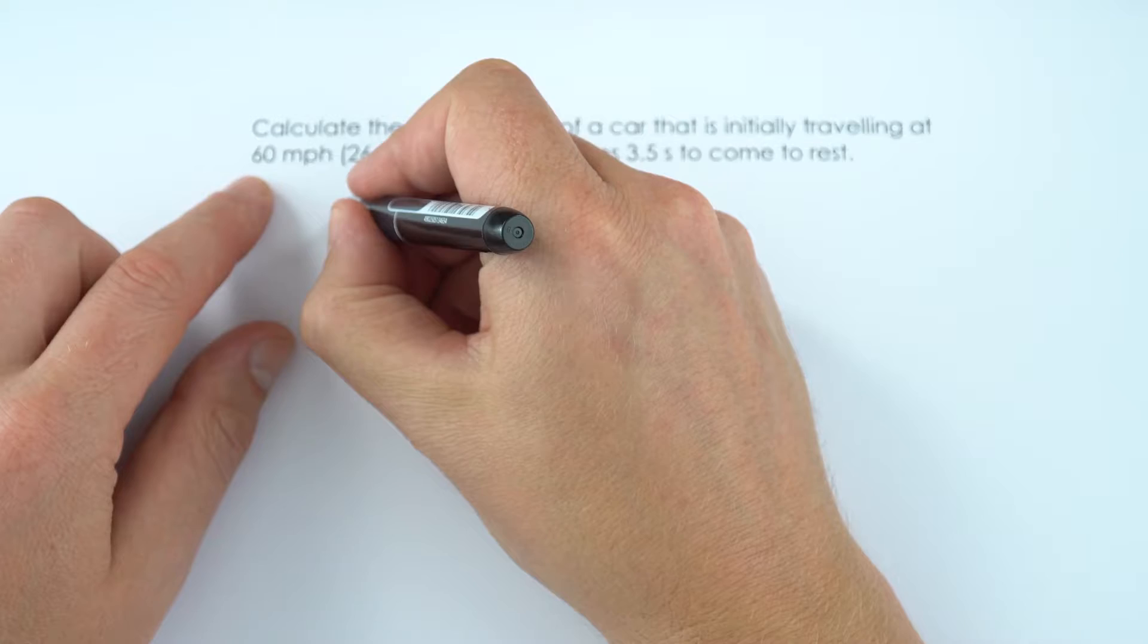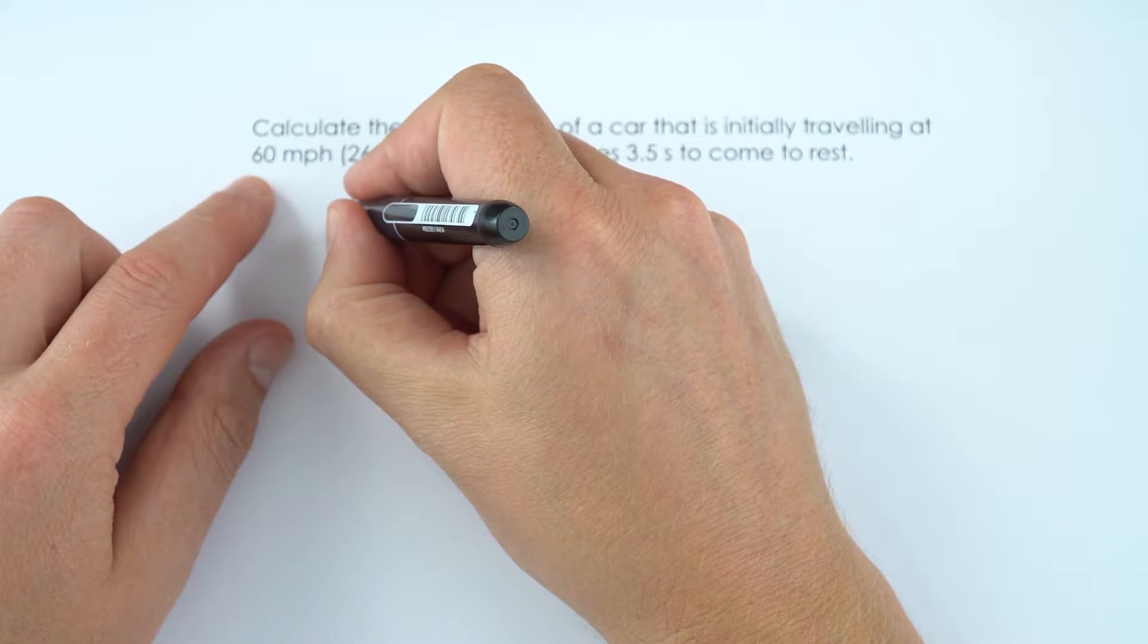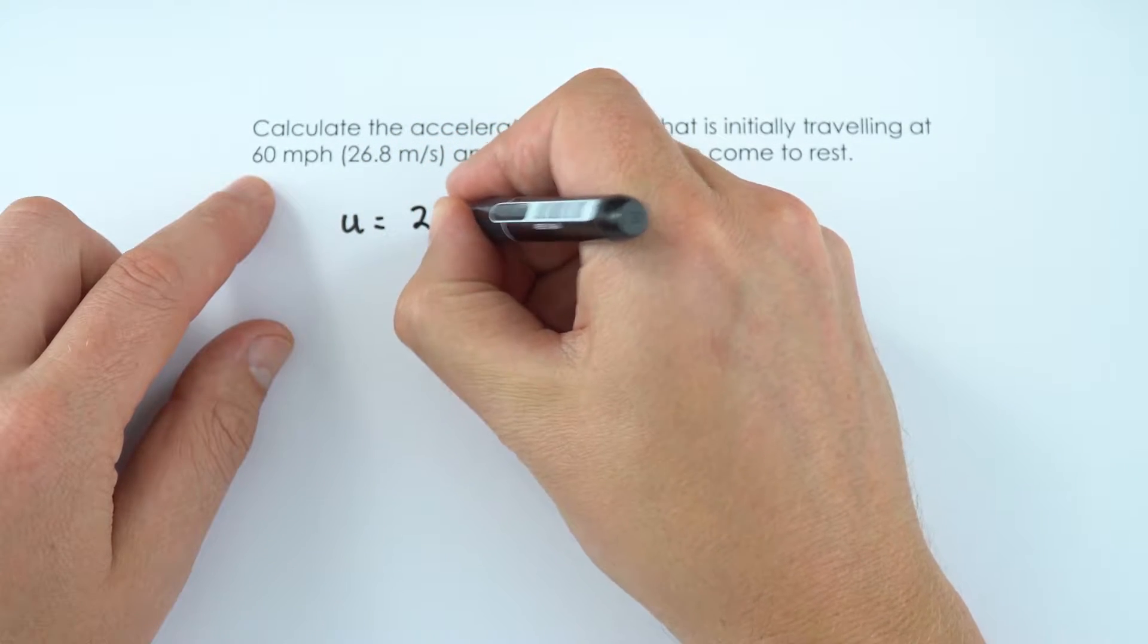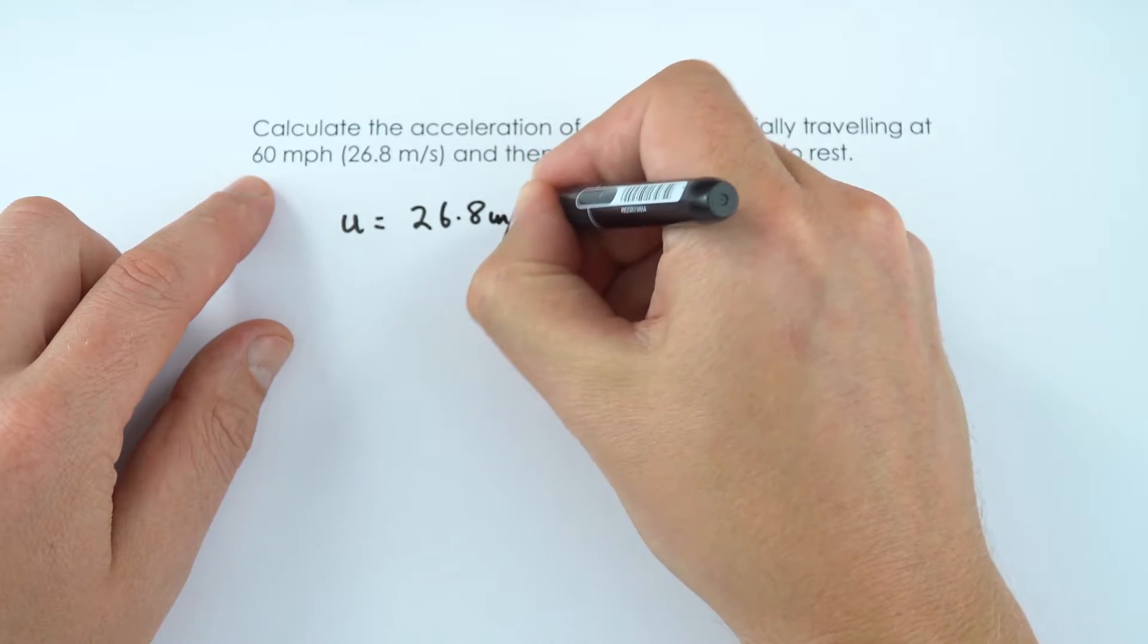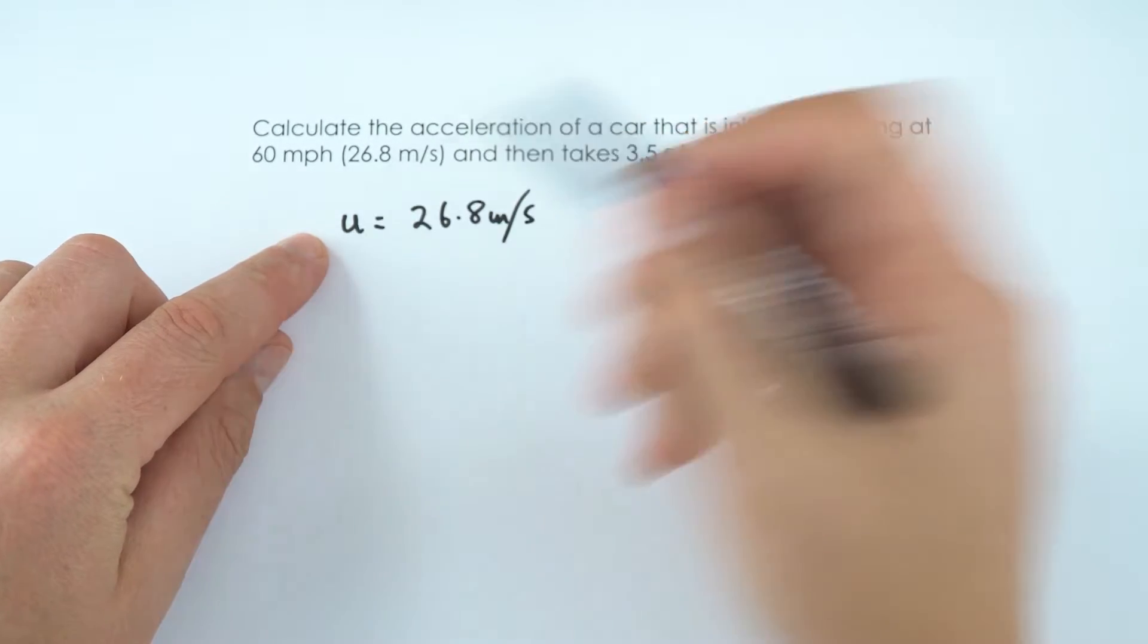So what I'm going to do is write down what we know from the question. It was initially traveling at a value u of 26.8 meters per second, where u is my initial velocity.